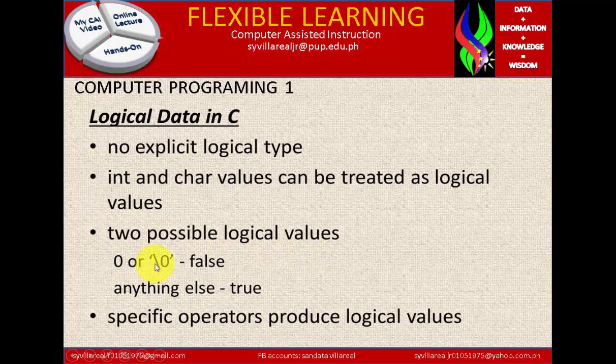Now two possible logical values: we have zero or backslash zero, which is considered to be false. Anything else is considered to be true. So we have two signs of false: zero or backslash zero. And everything from one to nine is considered to be true, and anything else is considered to be true.